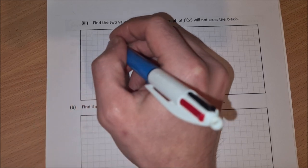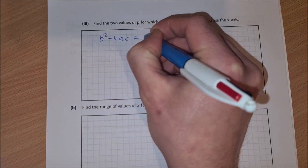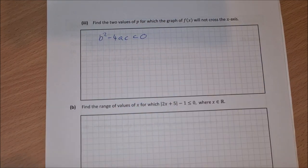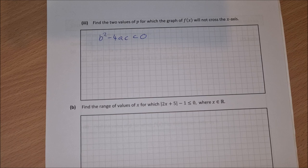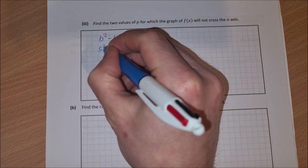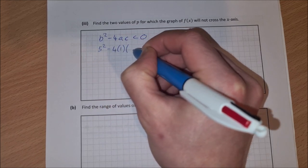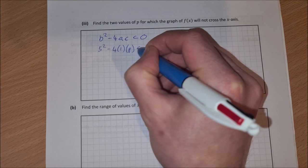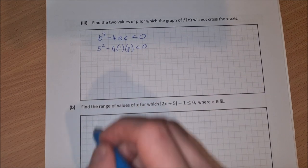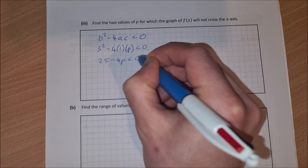So that is b squared minus 4ac is going to be less than 0 because it does not cross the x-axis. Therefore it has no real roots. So b is 5, so that's 5 squared minus 4 times a is 1, and c is p. We want that to be less than 0. So that's 25 minus 4p is less than 0.